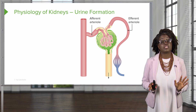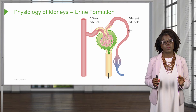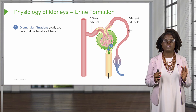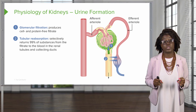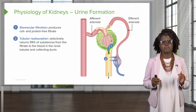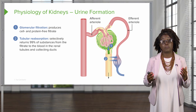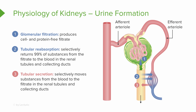There are three processes involved in the formation of urine as well as the adjustment of our blood composition. First, we have glomerular filtration, which produces a cell and protein-free filtrate. After this, we have tubular reabsorption, which selectively returns about 99 percent of substances from the filtrate back to the blood in our renal tubules and collecting ducts. Then we have tubular secretion, which selectively moves substances from the blood to the filtrate in the renal tubules and collecting ducts.